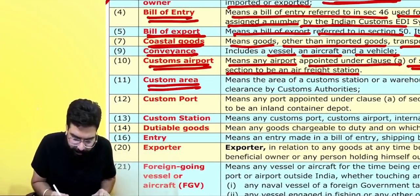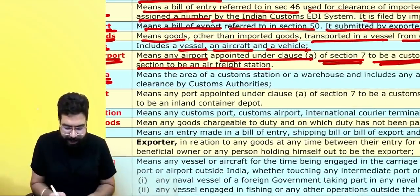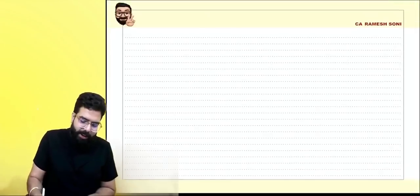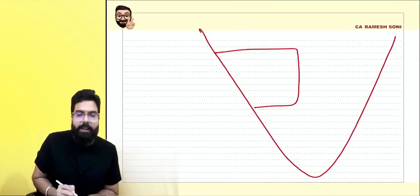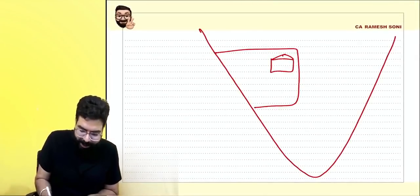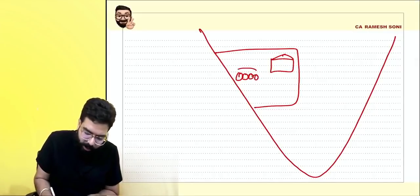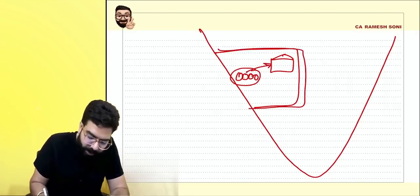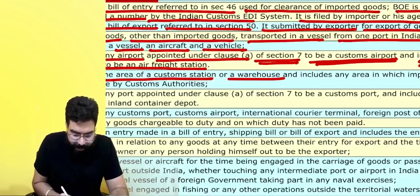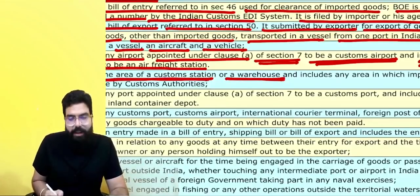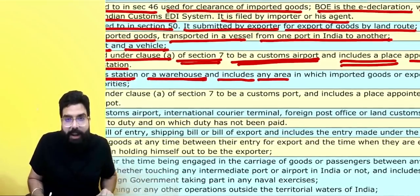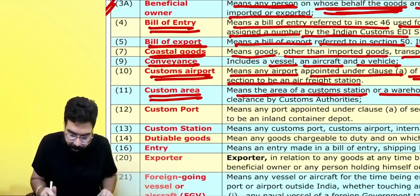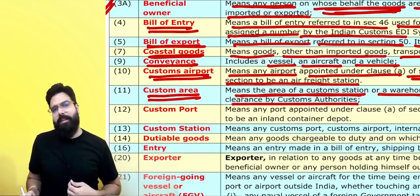What do you mean by a custom area? The custom area means the area of the custom station or a warehouse. When you go to the custom port, you will see the whole area including the custom warehouse where goods are unloaded — this whole area is the custom area. Custom area means the area of the custom station or warehouse and includes any area in which imported goods or export goods are ordinarily kept before being cleared by the customs authority.